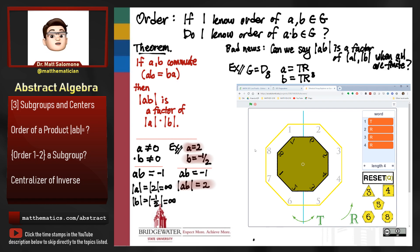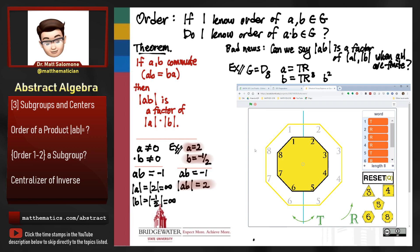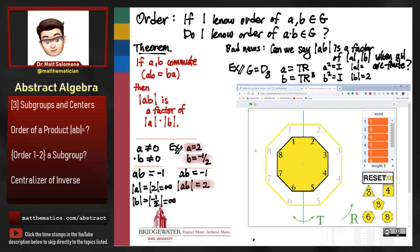Because they're reflections, if I do either operation twice — TR cubed once and then once more — I get back to the original position of my octagon. In other words, B squared equals the identity, so B is an element of order 2. The same argument applies to A: A squared equals the identity but A is not itself the identity, so A is also an element of order 2.